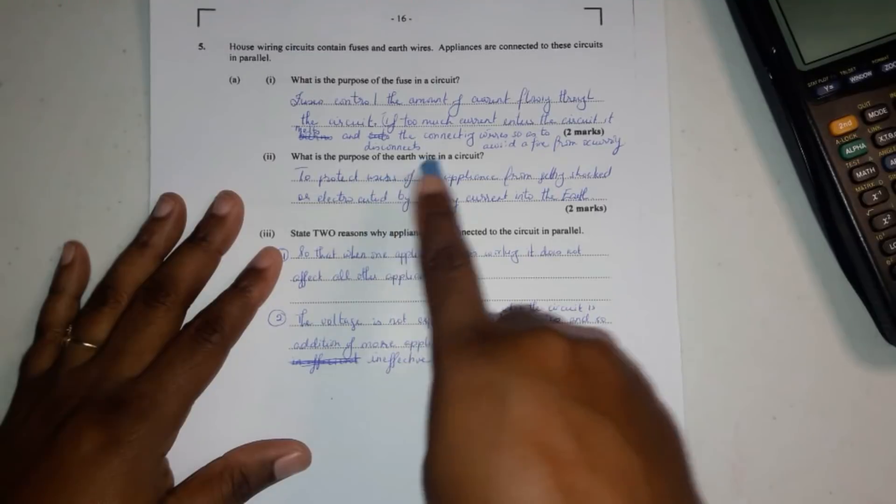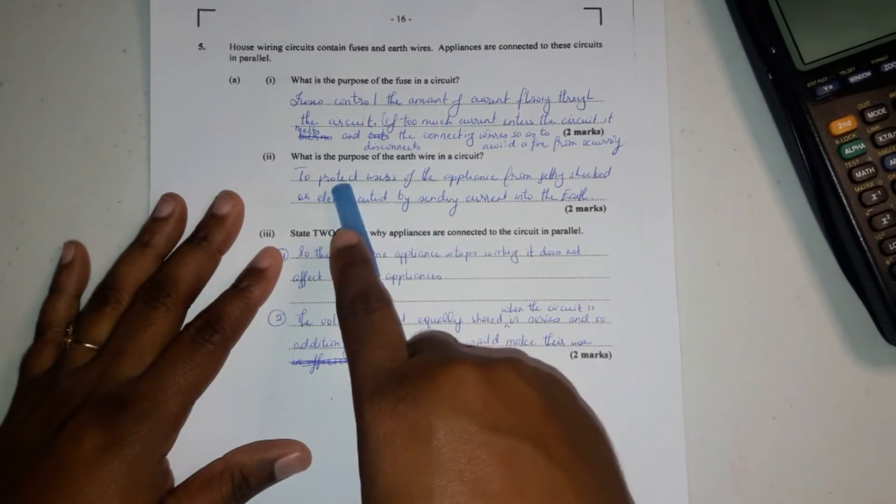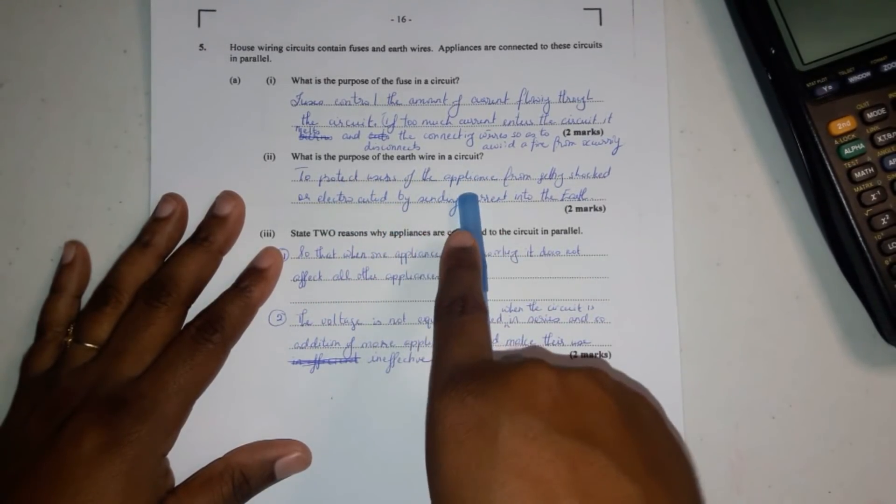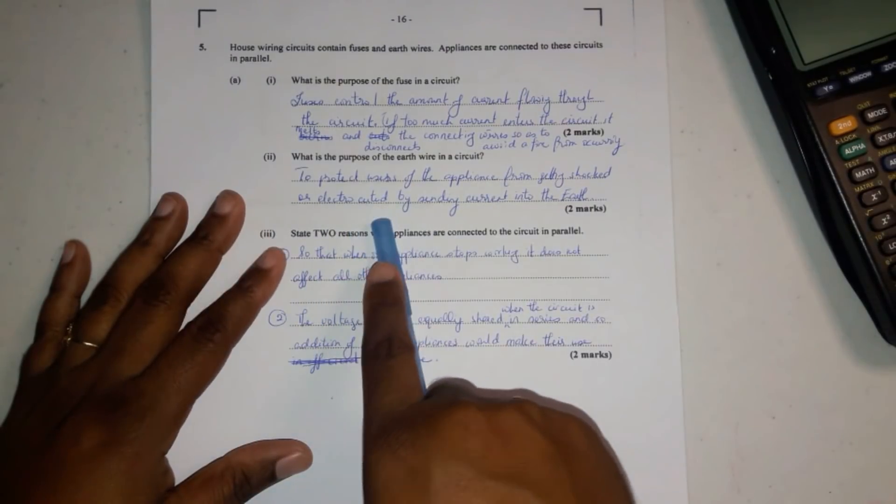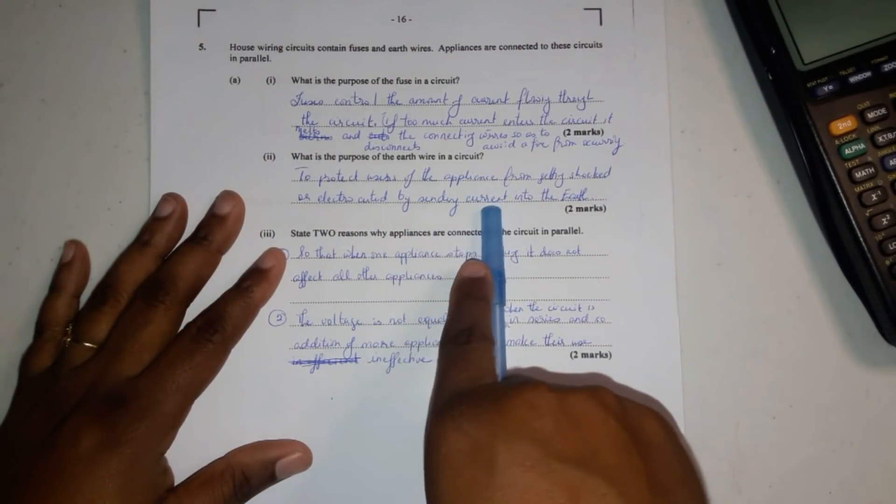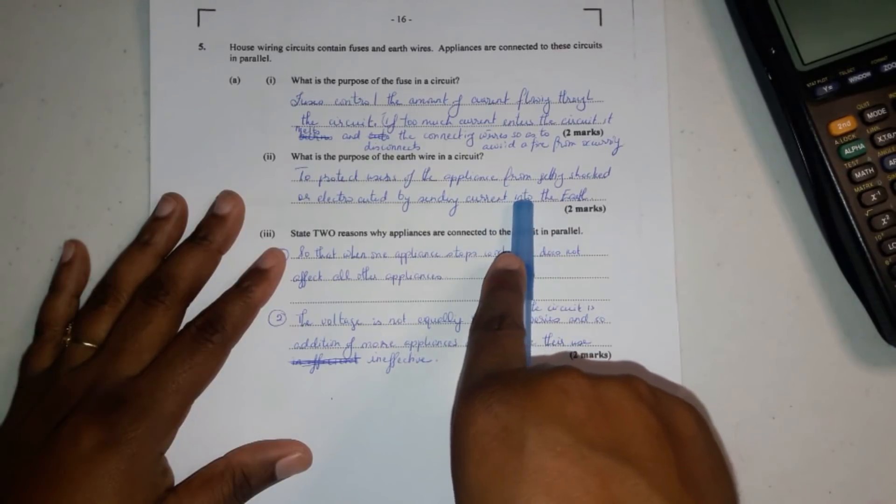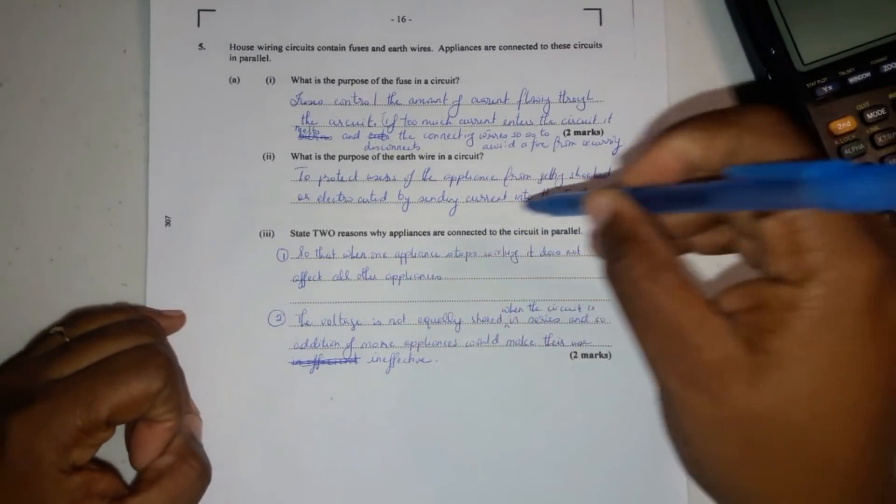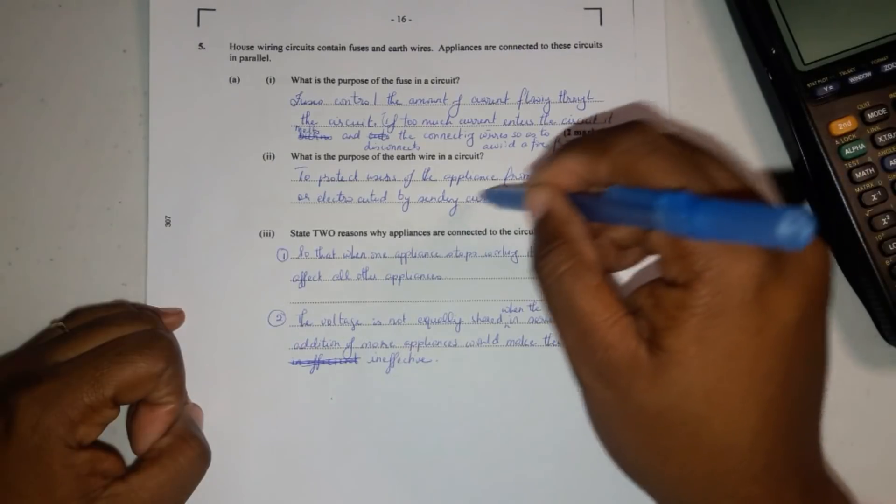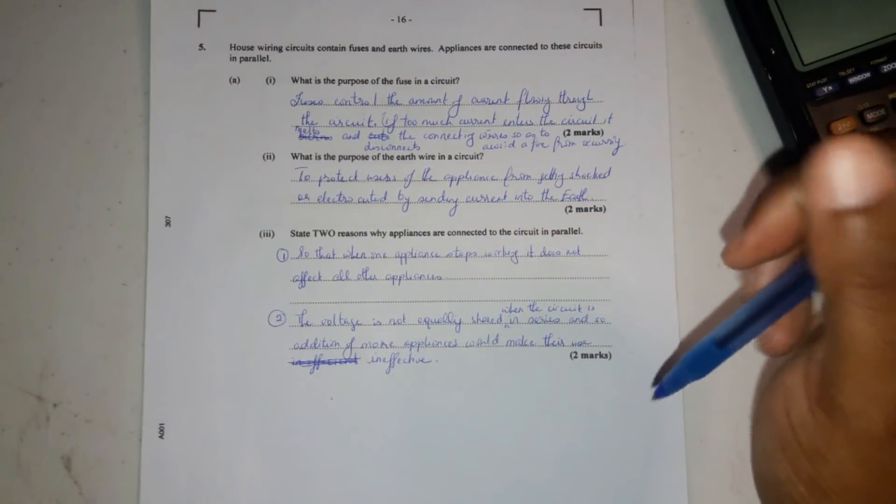Again, what is the purpose of the earth wire in a circuit? To protect users of the appliance from getting shocked or electrocuted by sending current into the earth wire. Okay, when the circuit short circuits.